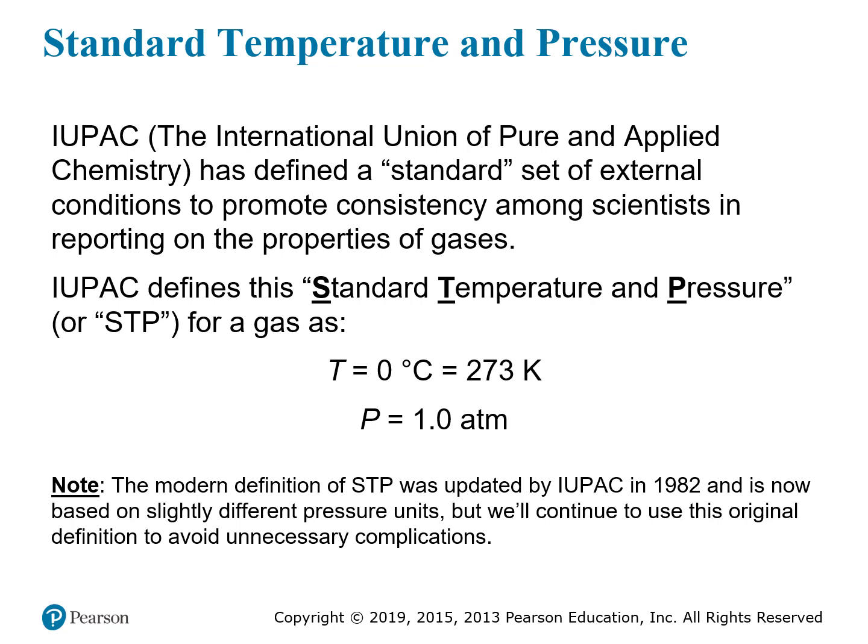Avogadro's Law — this relationship between volume and number of moles — is very important in chemistry, especially in reactions between gases. To properly use it, we always need to know the pressure and temperature. So IUPAC has defined a standard temperature and pressure to promote consistency: a temperature of 0 degrees Celsius, or 273 K, and a pressure of 1 atmosphere. This is STP, standard temperature and pressure. We'll stick to this older definition, which is still widely used in practice.